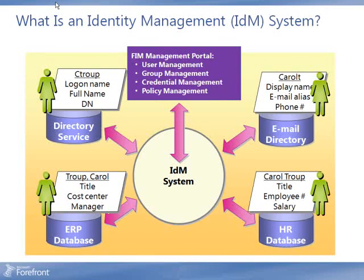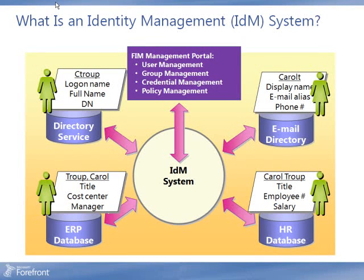An identity is the summary of information about objects of interest that we keep. It might be a person, and we might find information about that person stored in different directories and databases throughout an organization, and often these are incompatible. The information stored in these objects or resources is in the form of attributes. Examples of identity attributes include names, email addresses, telephone numbers, and job titles. A group might contain a member list; a computer object might include a domain attribute.